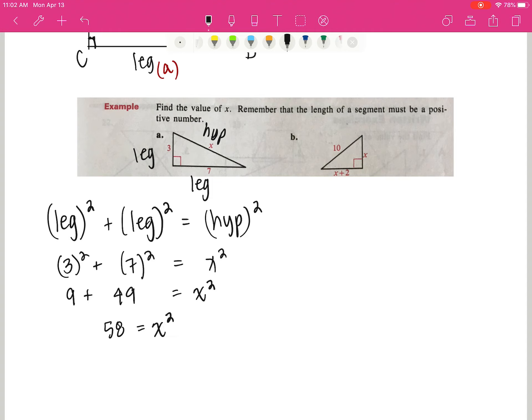We don't want to solve for x squared. We want to solve for x. So that's where we use the square root property. We're going to square root both sides. Now, normally when we square root both sides we get a plus or minus. However, x represents a length, and lengths are not negative. So we're just going to deal with the positive square root of 58.